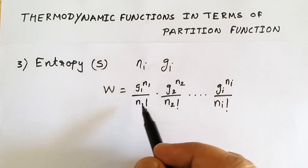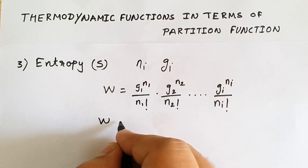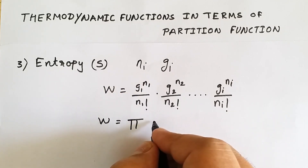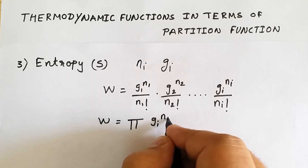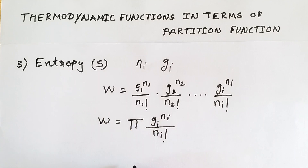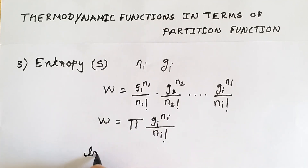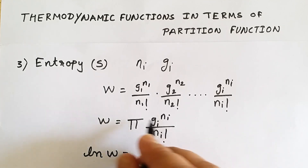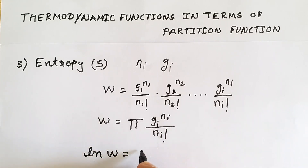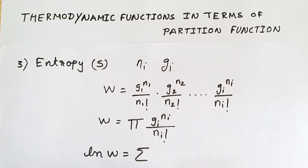This is how we write the thermodynamic probability of distributing Ni number of indistinguishable particles amongst gi energy states. Hence W equals the product over i of gi raised to ni upon ni factorial. Now we will take the logarithm on both sides. Since logarithm of a product is a sum, the pi (product) will be converted into summation.